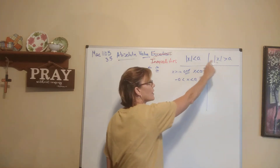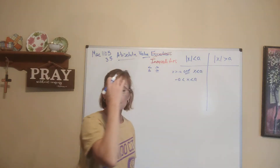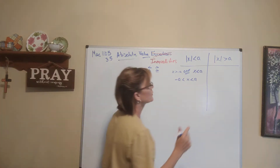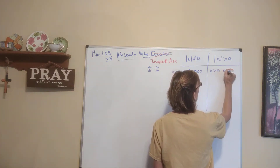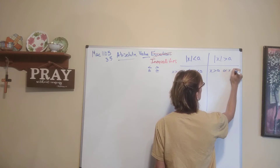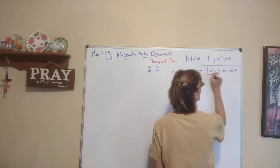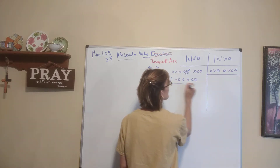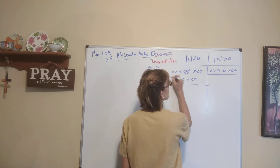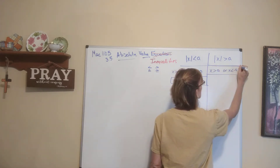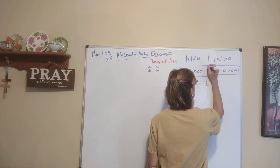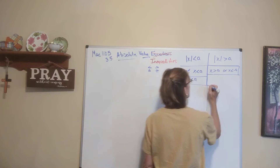If you have a greater than symbol, an 'or' is what goes in between these. So this means x is greater than a or x is less than negative a — that's when this will be true. These will be the two things you'll see that we'll be working with.